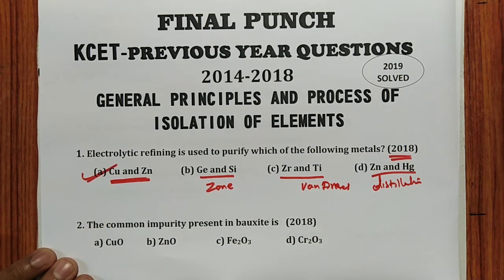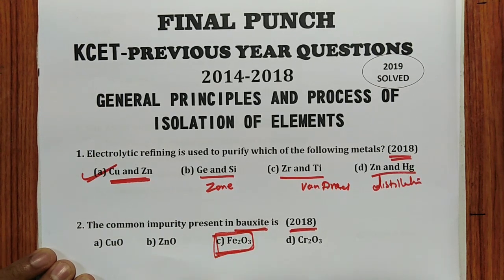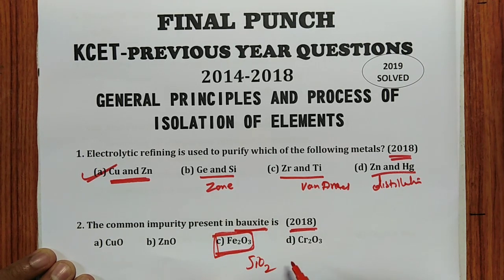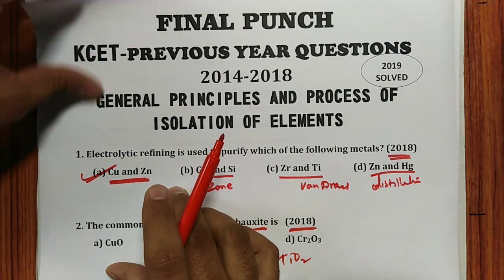Question 2 (2018): Common impurity present in bauxite. Students tend not to select Fe₂O₃ because it is associated with hematite ore. But remember, Fe₂O₃ is the impurity in bauxite. Other impurities are SiO₂ and TiO₂ — they could have asked about TiO₂ or SiO₂, but to test your knowledge, the answer is Fe₂O₃.